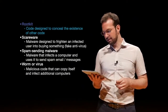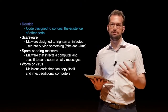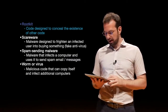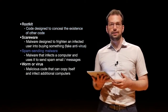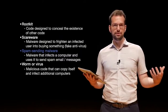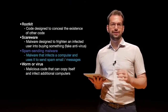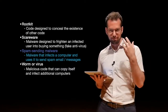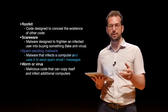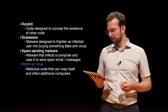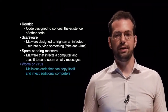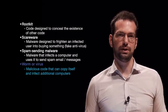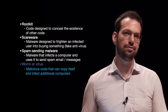Rootkits are code designed to conceal the existence of other code. If a rootkit infects the system, it essentially takes control of the system and can hide malware that's running. Spam-sending malware — attackers make a lot of money sending spam emails, so they need resources and want to hide their location. They infect many computers and use those to send spam emails out. Worms and viruses are malicious code that can copy itself and infect additional computers. A worm is more focused on replication, whereas a virus normally has some activity that it needs to execute.